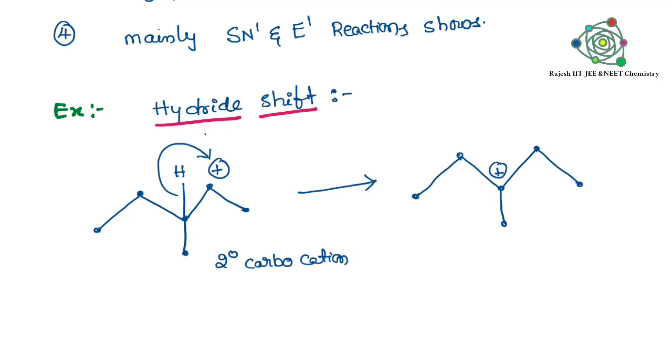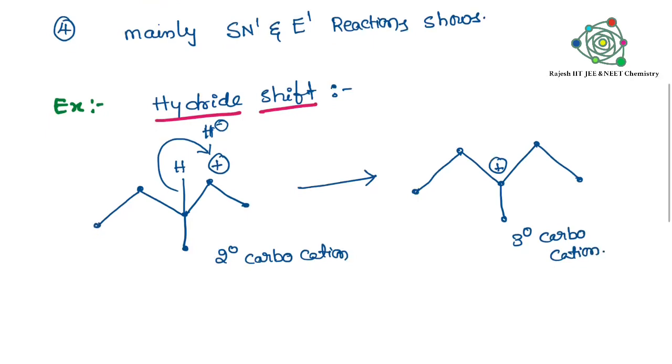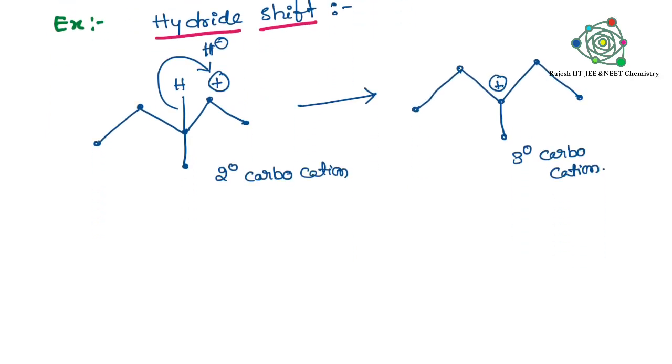Attacking on the positive, then in the form of H minus. So it is becoming like a third degree carbocation. This takes place spontaneously. Second degree is converted to third degree carbocation.